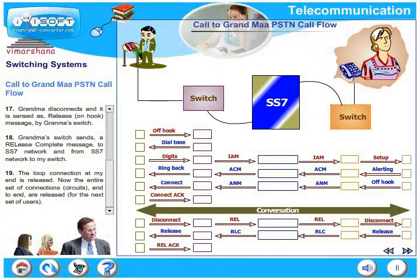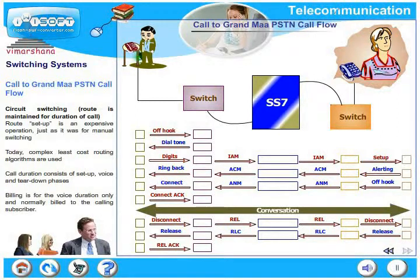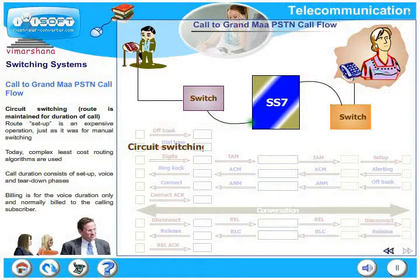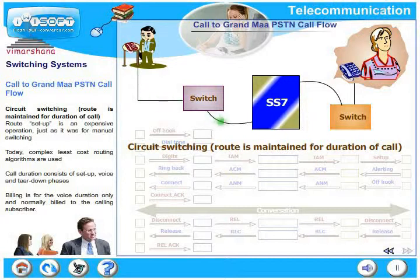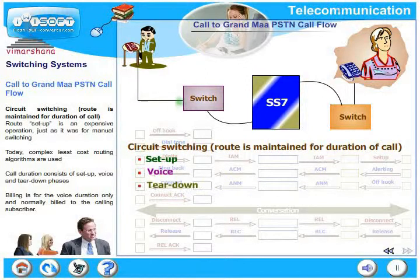This completes a typical PSTN call flow. What is the principle behind it? This is called circuit switching — that is, the route is maintained for the entire duration of the call. Route setup is, by now you would have understood, an expensive operation, just as it was for manual switching. But fortunately today, complex least-cost routing algorithms are used. Call duration consists of setup, voice, and tear-down phases. Billing is for the voice duration only, and normally billed to the calling subscriber.